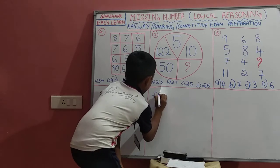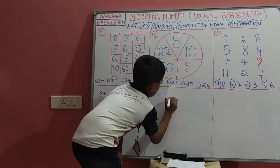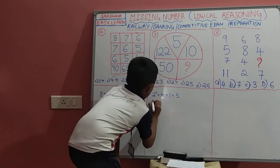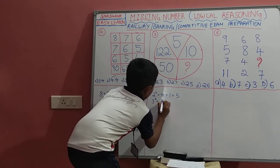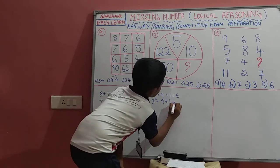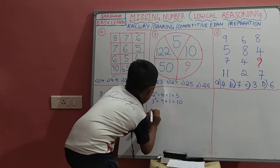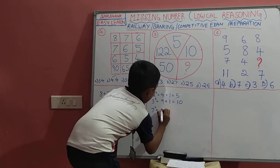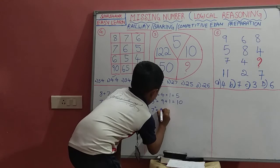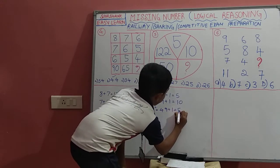2 squared is equal to 4, plus 1 is 5. And 3 squared is equal to 9, plus 1 is 10. And 7 squared is equal to 49, plus 1 is 50.